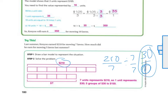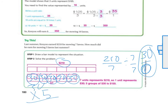If I need to know five lawns, that's 30 plus 30 plus 30 plus 30 plus 30, or five times 30, which is $150.